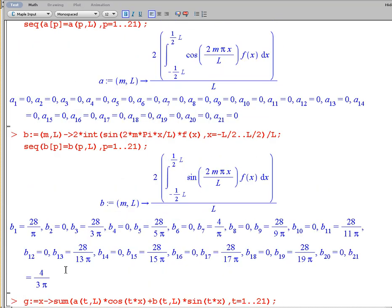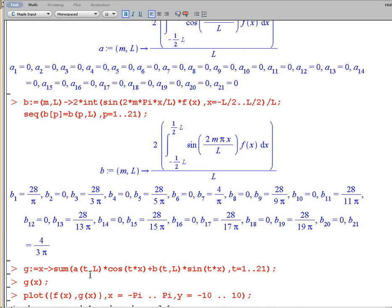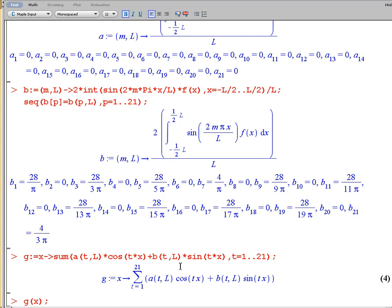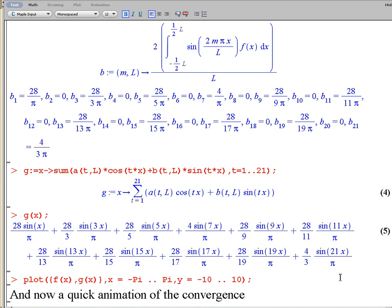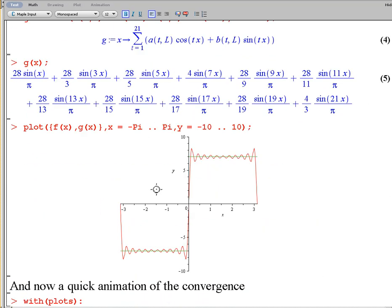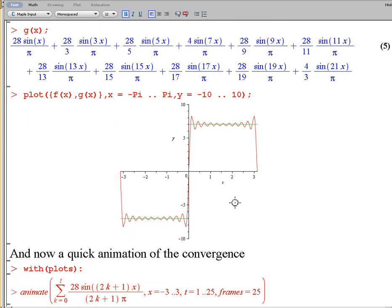And with this as sequences, it turns out we can calculate them really quick. We can then use the sum command to create our Fourier polynomial. So g of x looks like this. So we have our 21st degree Fourier polynomial. And if we plot that with f of x, we see we get a really good approximation.